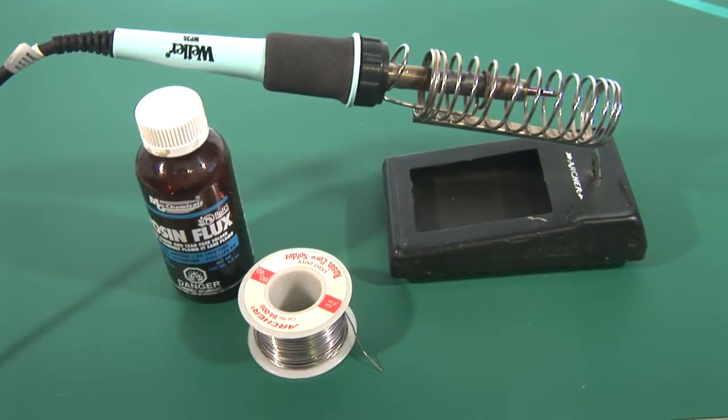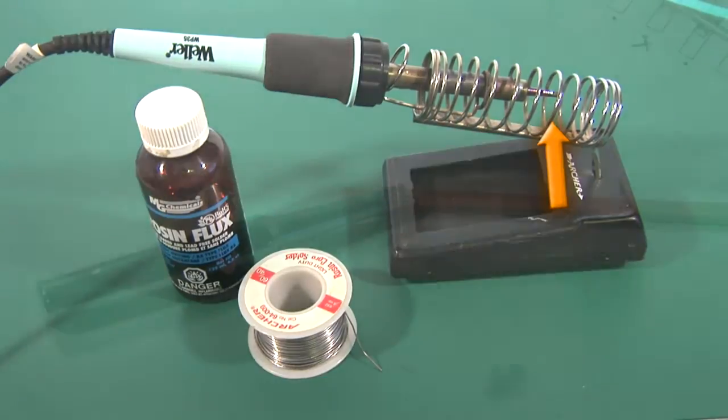For soldering rail to PC ties quickly enough that I don't melt the plastic ties in the Central Valley tie strips, I use liquid rosin flux, 20 thousandths rosin core solder, and a Weller 35 watt soldering iron with a 93 thousandths screwdriver tip.